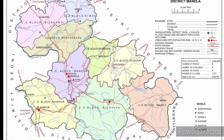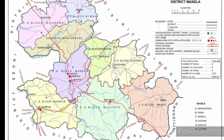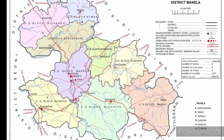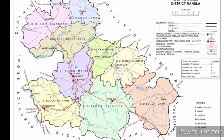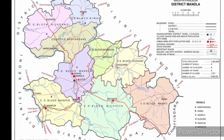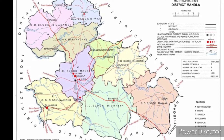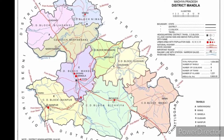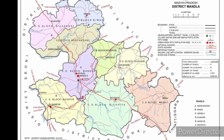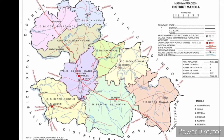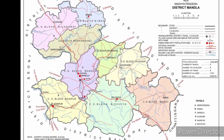And the 9 development blocks are Bichya, Bija Dandi, Guguri, Mandala, Maui, Mehengao, Nainpur, Narayanganj, and Nivas. And there is 1 Lok Sabha constituency and 3 Vidhan Sabha constituencies.